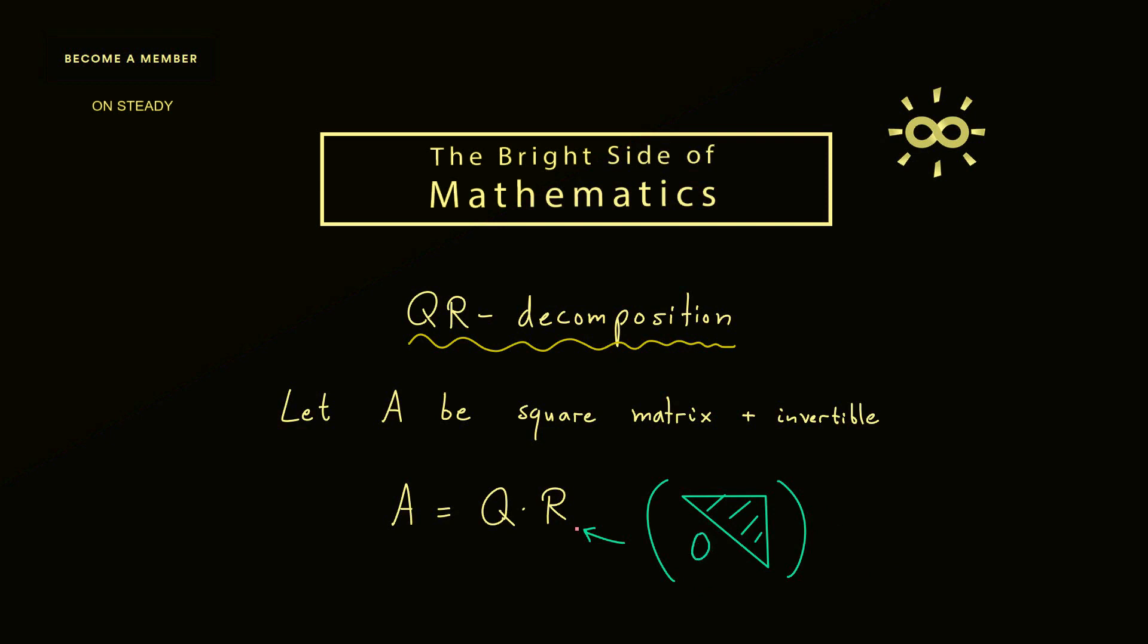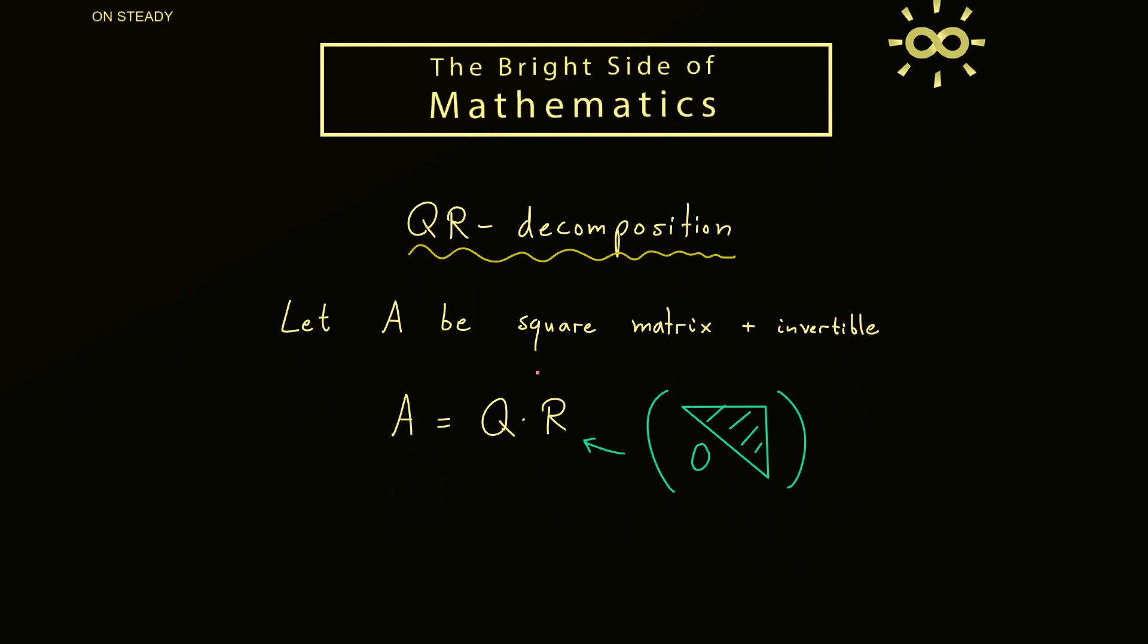And on the other hand we have our matrix Q, which should be an orthogonal or unitary matrix. If we deal in the real vector space R^n, we want here an orthogonal matrix, which means that the matrix is invertible and that the transpose is the same as the inverse of Q. And if we deal in the complex vector space C^m, we want the unitary matrix, which means roughly the same, but here we use the adjoint and it should be the same as the inverse of Q.